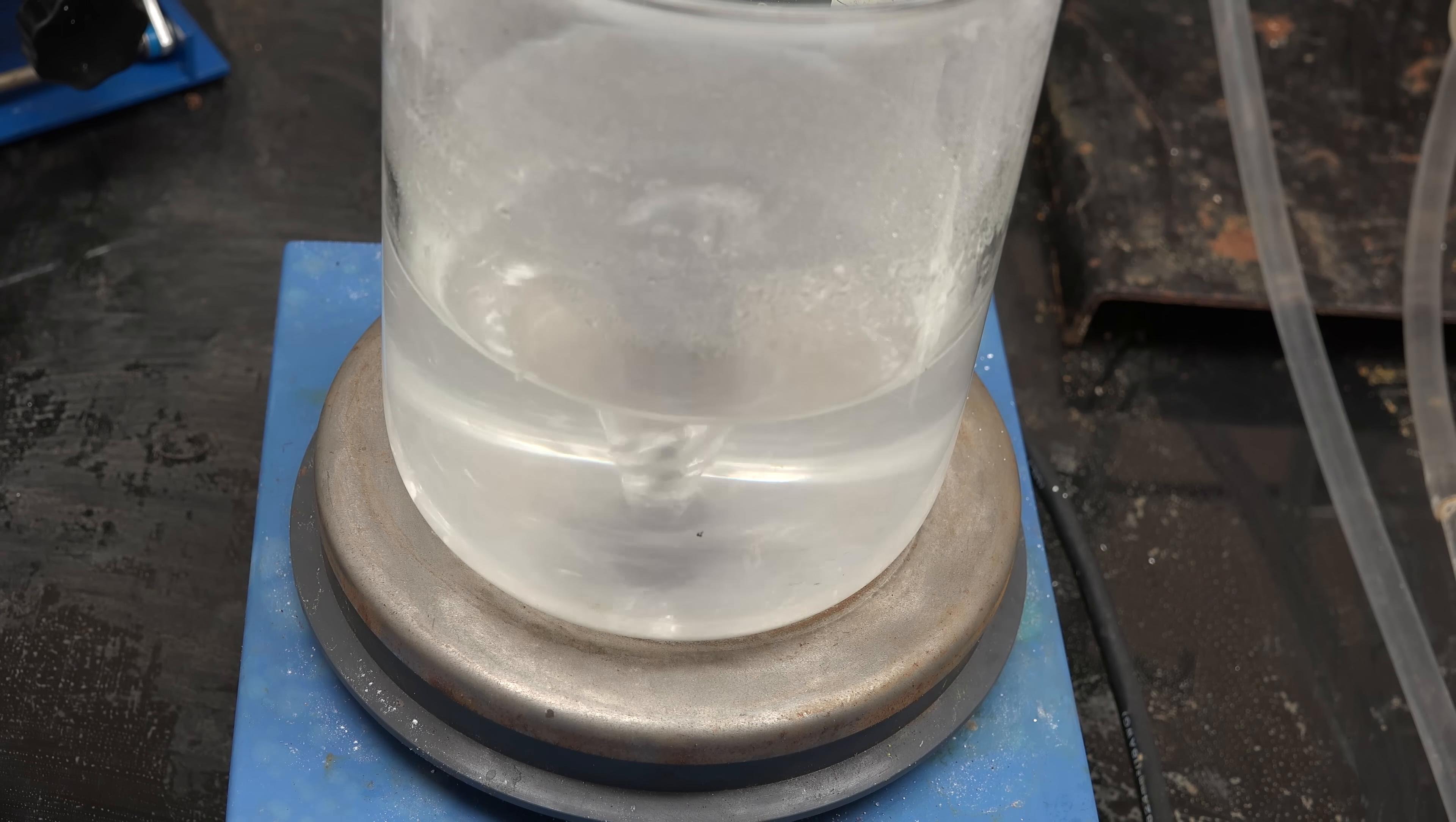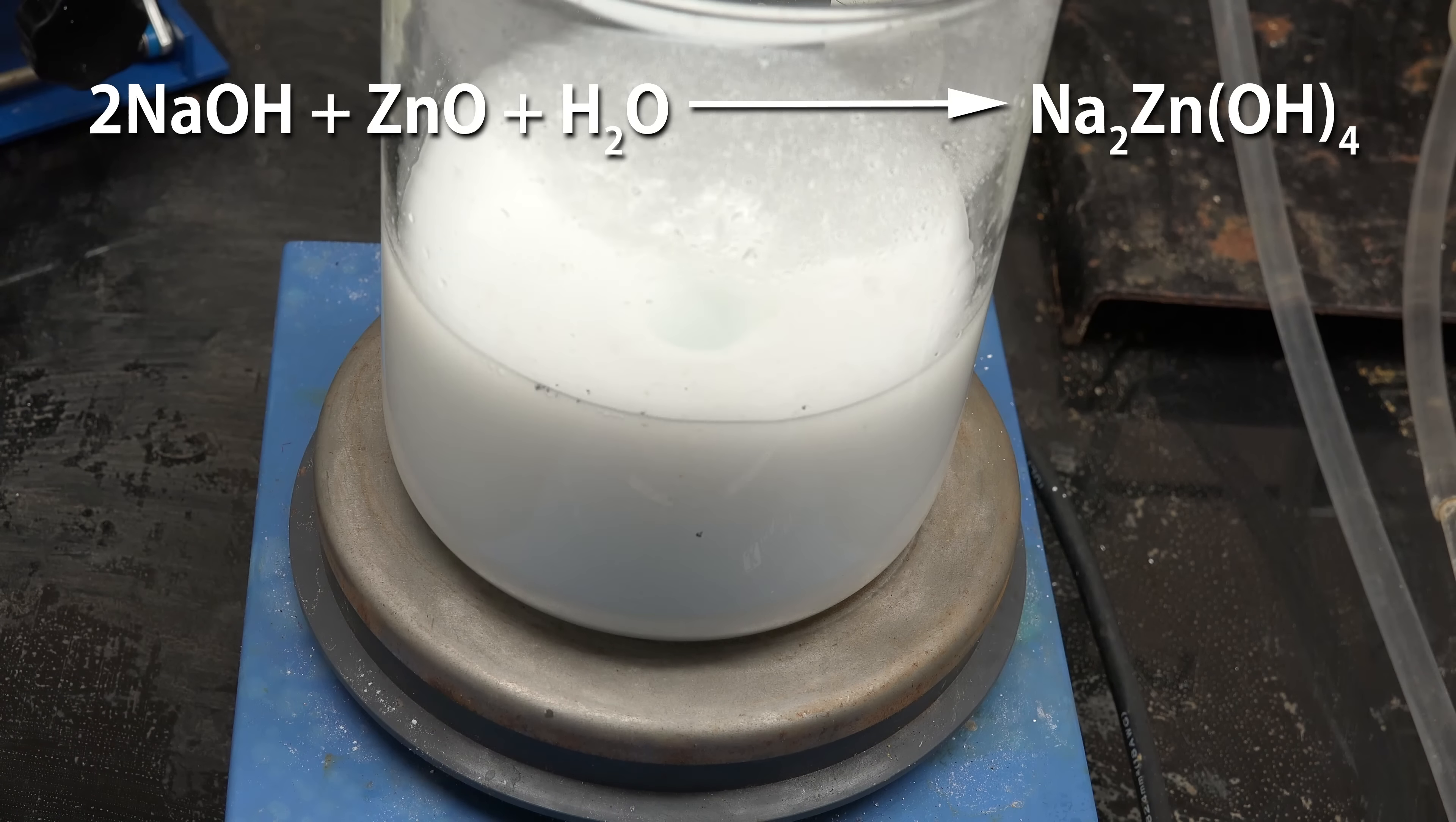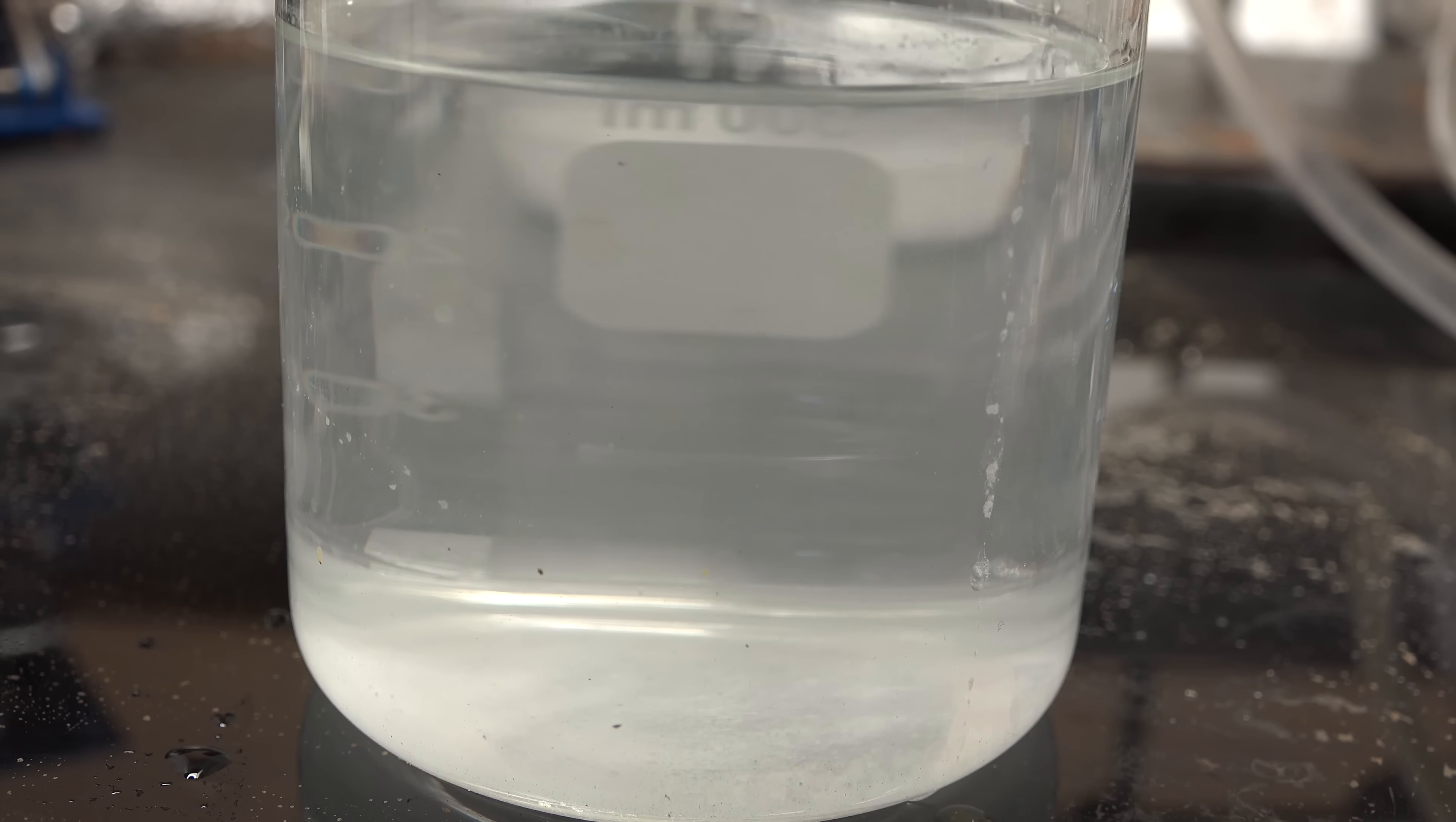Zinc oxide can easily be bought from pottery supply companies and soap making suppliers. What's happening is the zinc oxide is reacting with sodium hydroxide to form sodium zincate. Now I'm going to let the mixture stand overnight to settle and decant off the clear solution. I tried filtering it but my zinc oxide was so fine that it passed right through. Anyway here we are with the decanted clear solution of sodium zincate.